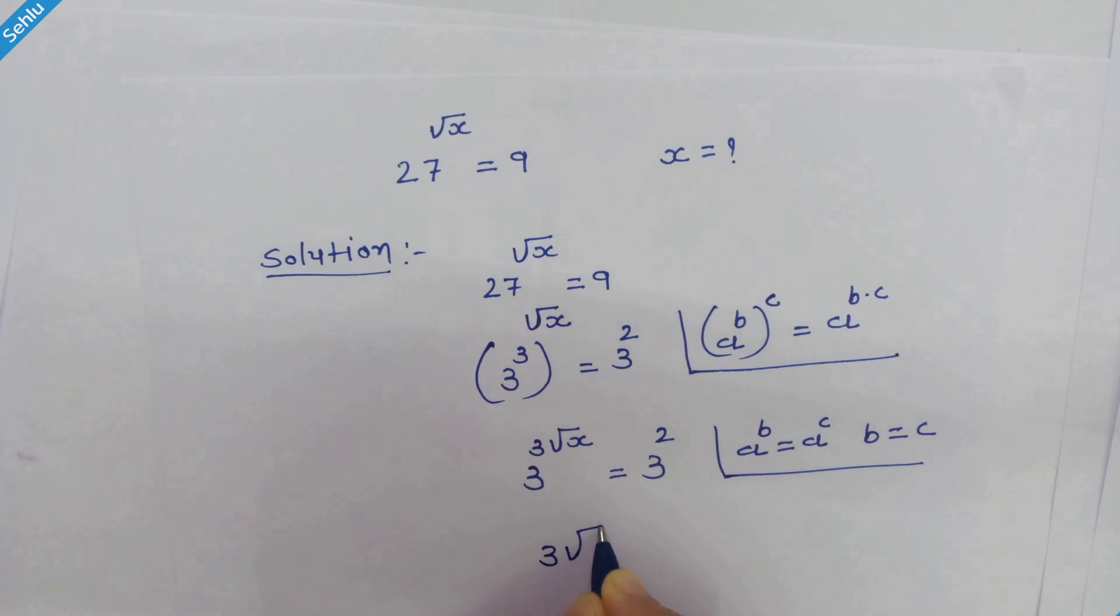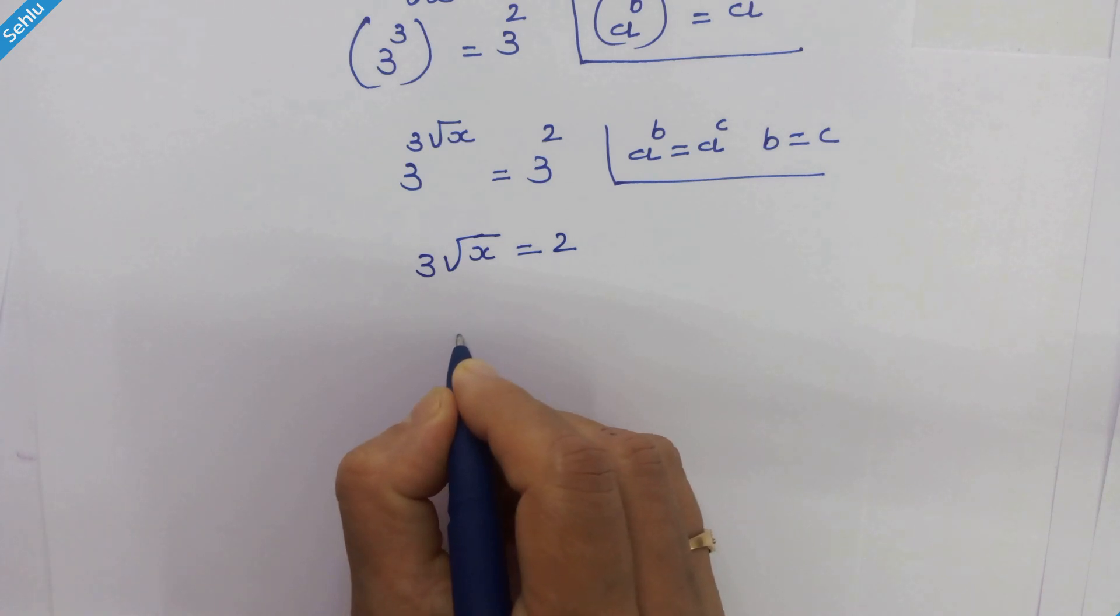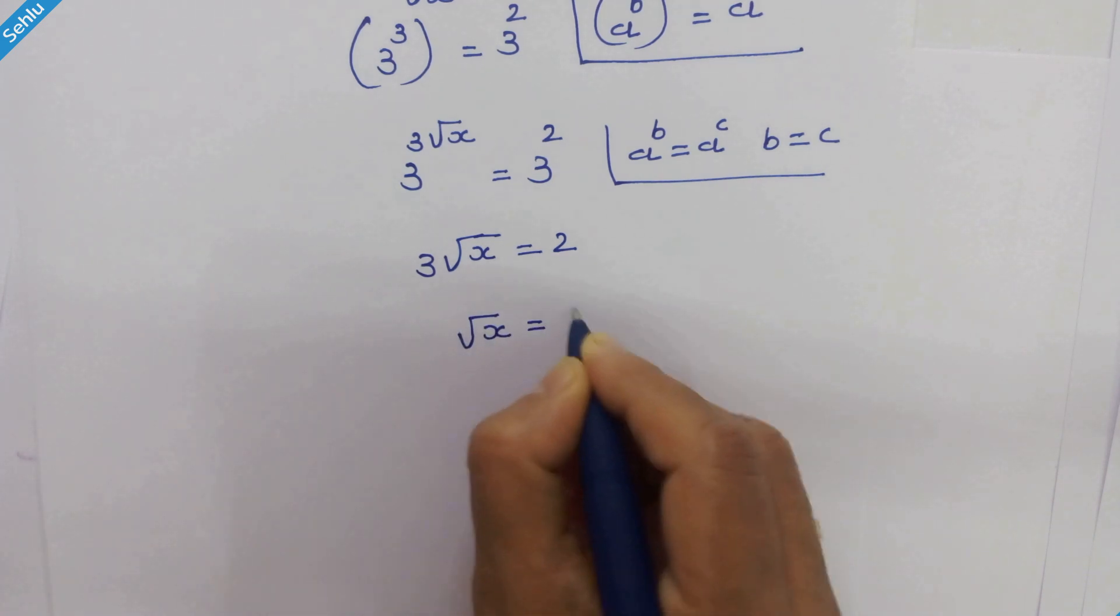So 3 times square root of x equals 2. Let's move this 3 to the right hand side. So we have square root of x equals 2 upon 3.